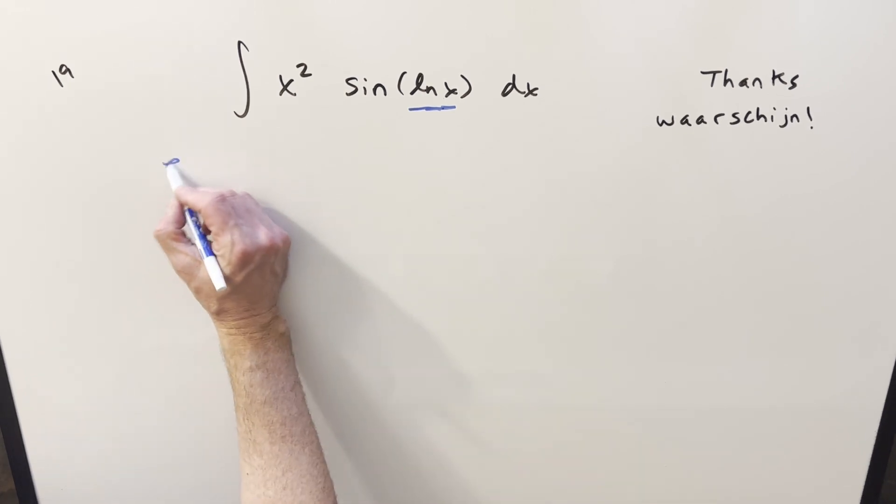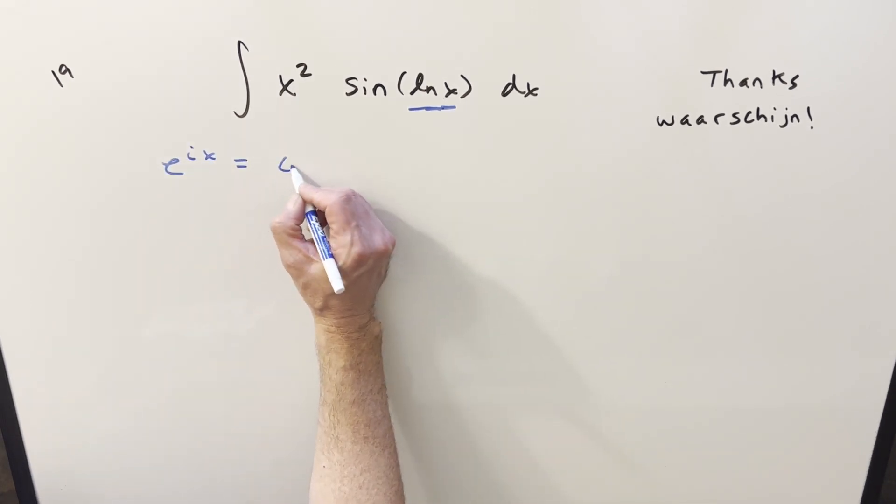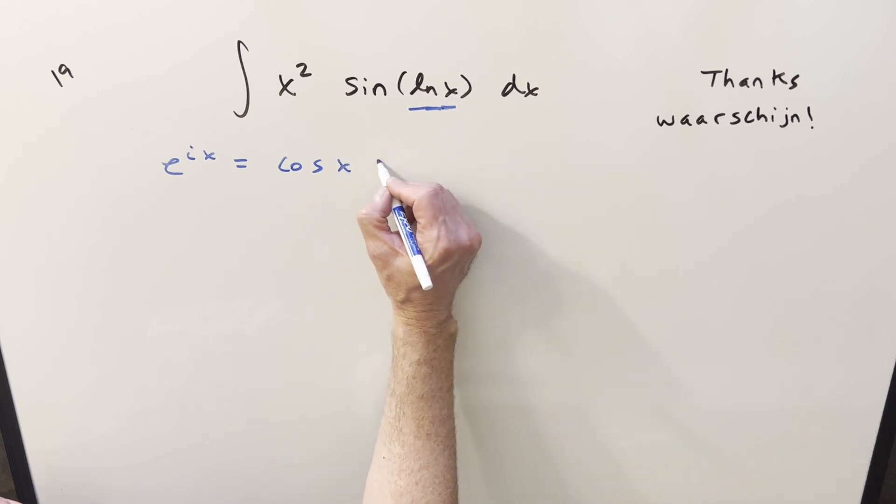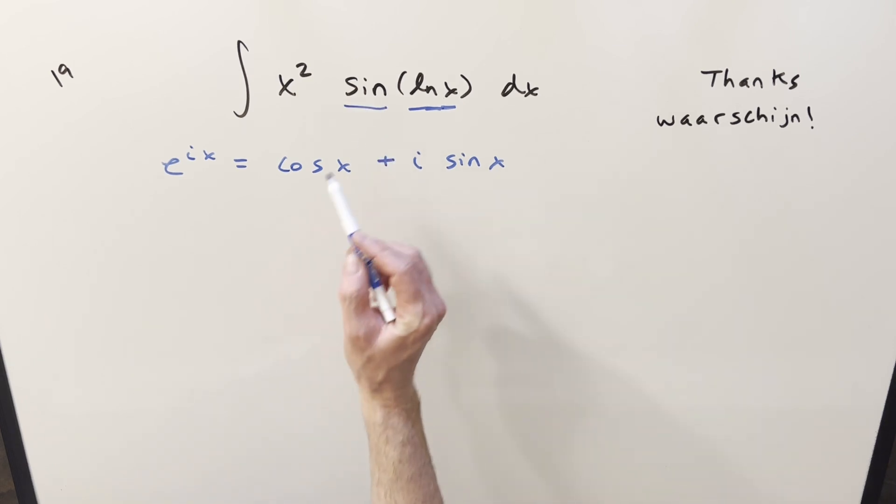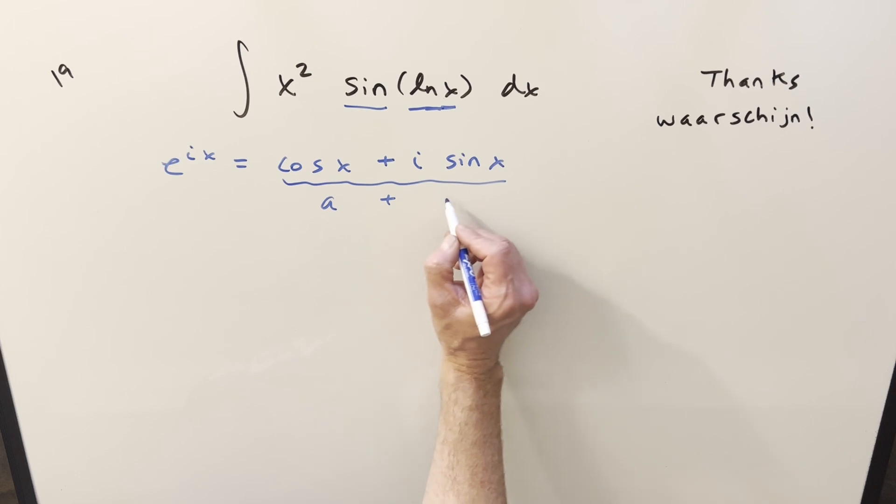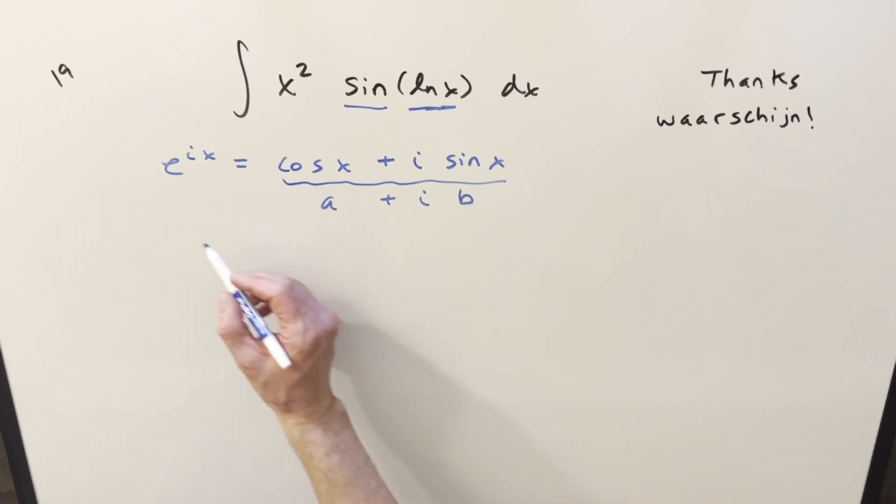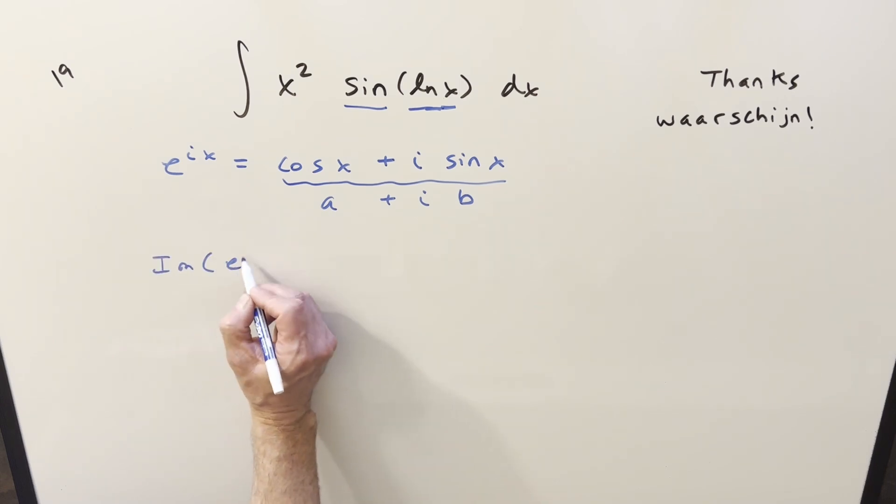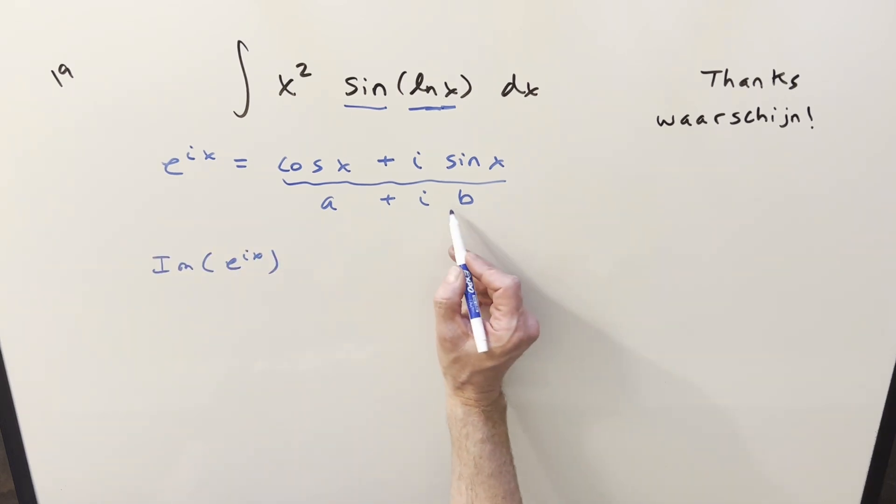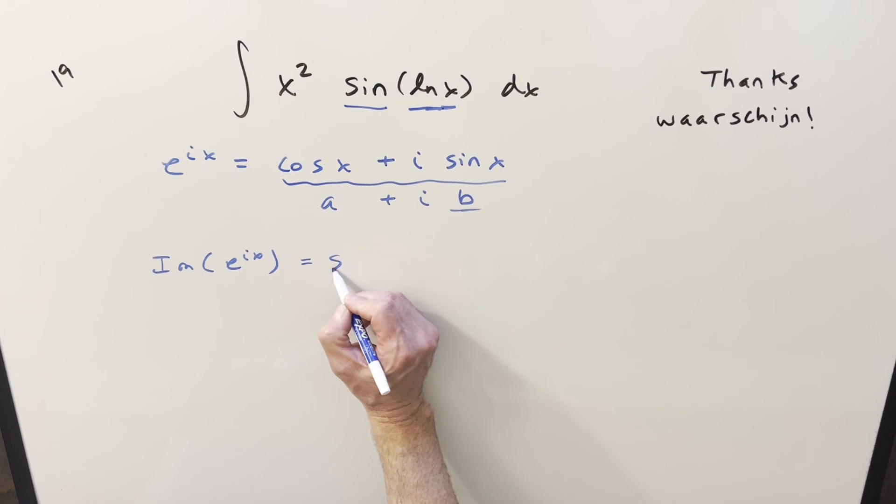So to get started for Euler's formula, what we have is e to the ix is just going to be the same thing as cosine x plus i sine x. So first, just thinking about sine, if we look at this as a complex number in the form a plus bi or ib, well then the imaginary part of e to the ix, that's just going to be this piece right here. This is just going to be sine x.